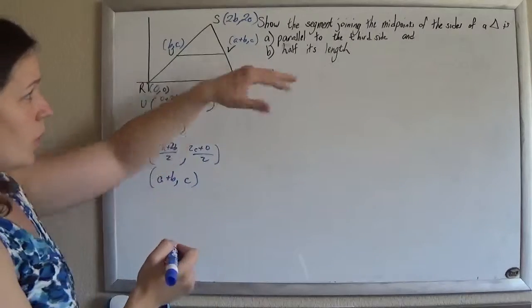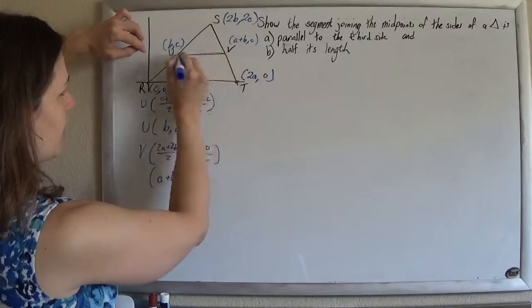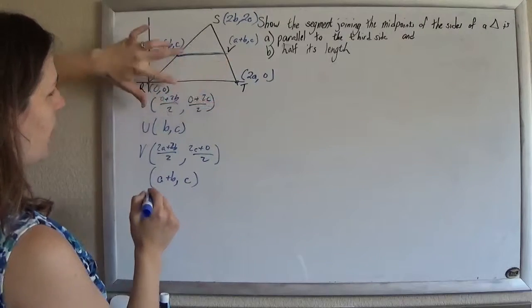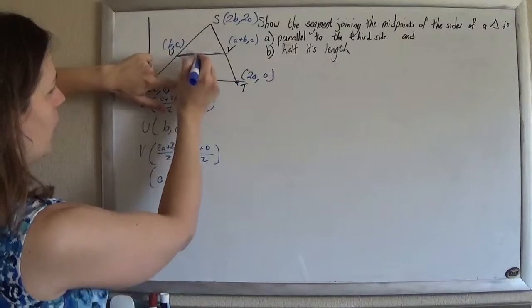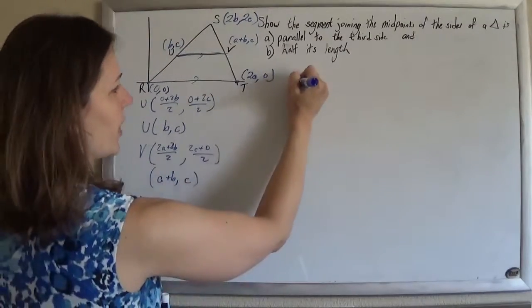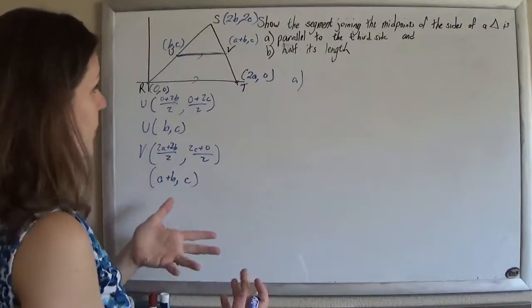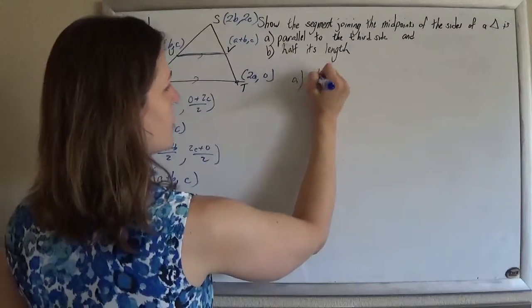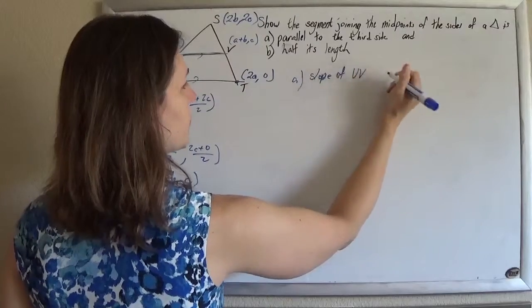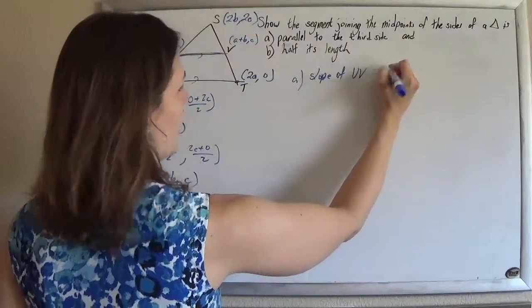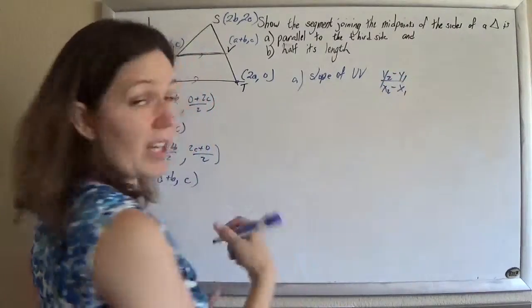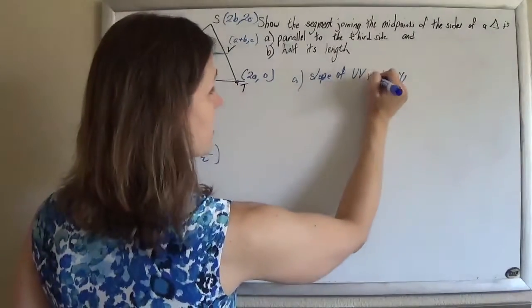And so to show that this length here, that segment joining the midpoints, is parallel to this side, we need to show that the slopes are the same, because we know that if lines are parallel, their slopes are the same. Okay, so we'll do the slope of uv, and so we're just doing y2 minus y1 over x2 minus x1, your change in y over your change in x.